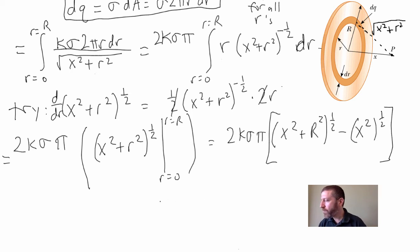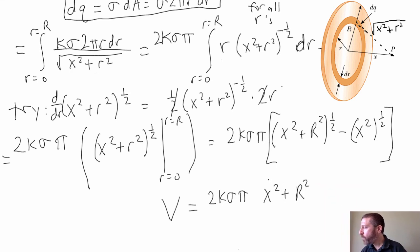And of course, that just gives us X. So when we're all done, this integral, in other words, the potential here, V equals 2K sigma pi times the square root of X squared plus R squared minus X. There it is right there.